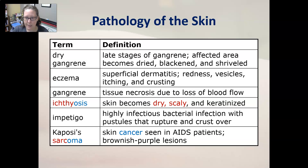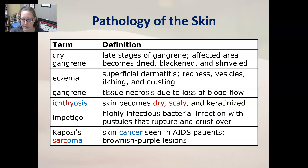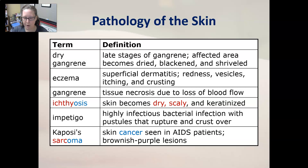Ichthyosis is when the skin becomes dry, scaly, and keratinized, which means hardened. Impetigo is a highly infectious bacterial infection with pustules that rupture and crust over. Kaposi sarcoma is a skin cancer seen in AIDS patients with brownish-purple lesions.